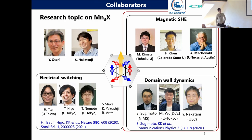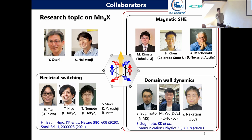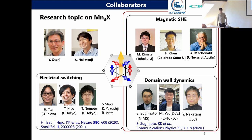This is the collaborators and funding of this project. I belong to Professor Otani's group in RIKEN. A very strong collaborator is Professor Nakatsuji at the University of Tokyo. About the spin-orbit torque effect of this material is Professor Kimura and collaborators. About the domain wall dynamics are Shimamoto, Mr. Wu who is a student, and Professor Nakatani who calculated the magnetic structure of this material — he is a specialist in micromagnetic simulation of magnetic materials.